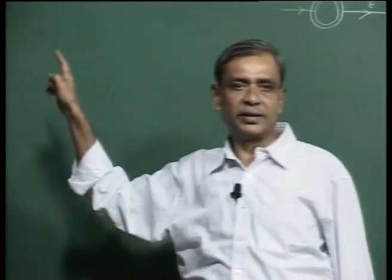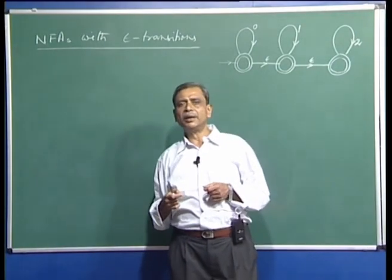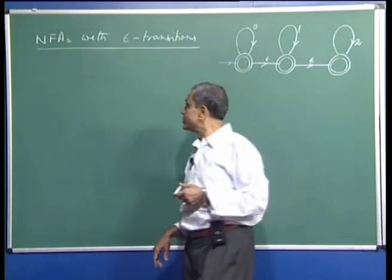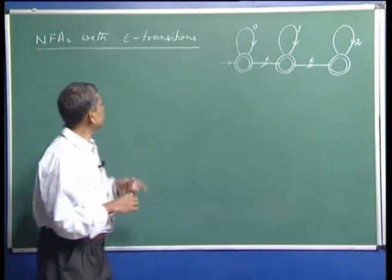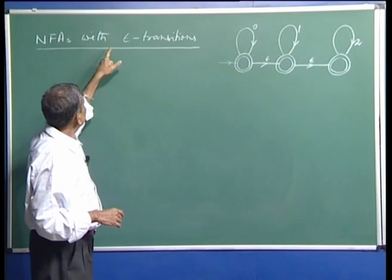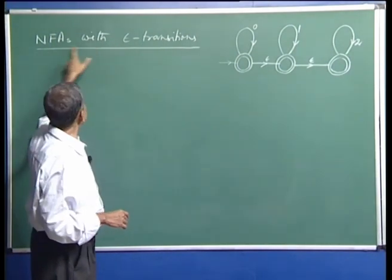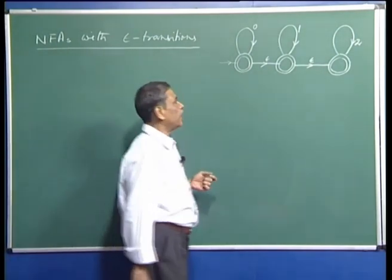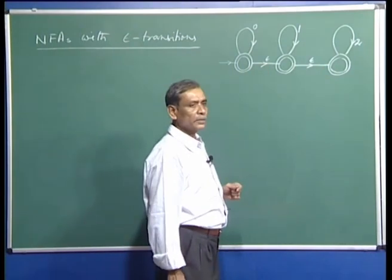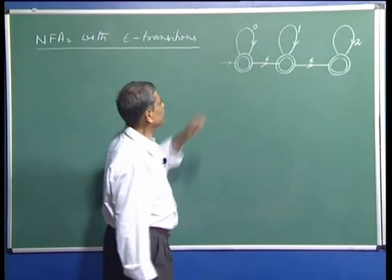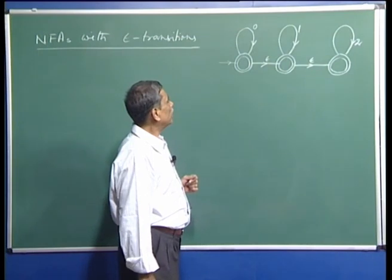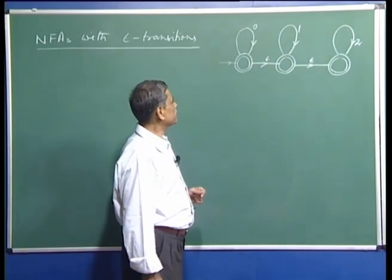Today, we will consider a generalization of NFAs. NFAs themselves were a generalization of DFAs, and now we are considering a further generalization: NFAs with epsilon transitions, which allow transitions not only on symbols but also on the empty string epsilon. Here is an example of such an automaton. Let us first informally understand how epsilon transitions work.